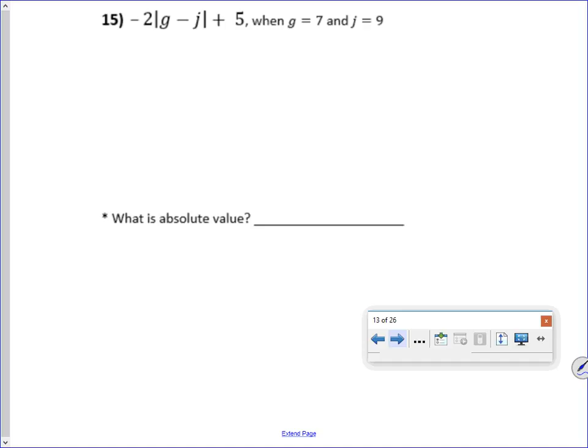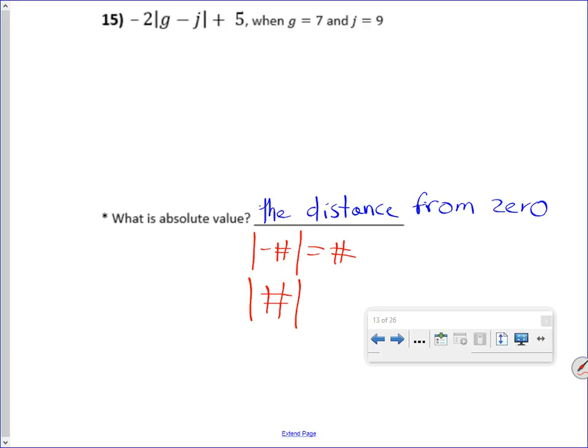So number 15, these bars here are absolute value. An absolute value is the distance from 0 for the origin. So now, that's the official definition. The easy definition is if you take the absolute value of a negative number, you get a positive number. If you take the absolute value of a positive number, the number doesn't change. So negative 2 times the absolute value of 7 minus 9 plus 5.